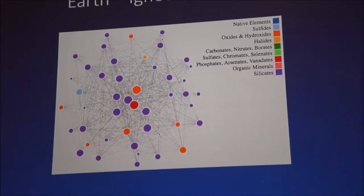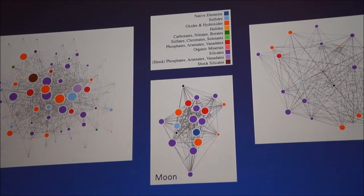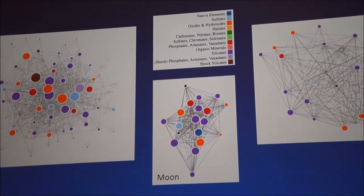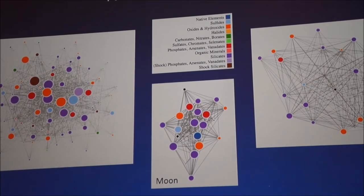So now let's have a look at the, again, very preliminary networks of the planetary material. So here we have Mars, Moon, and Vesta. So here we can just look at their different topologies. We can see there are some similarities to the igneous diagrams, but there are also some differences.